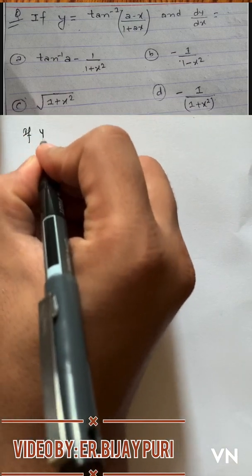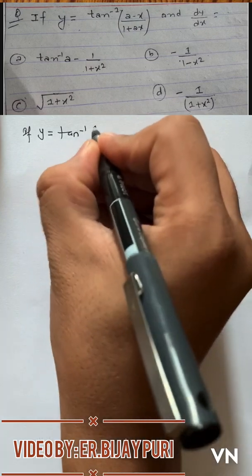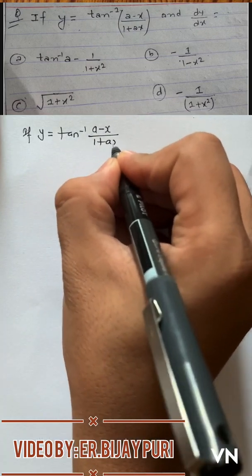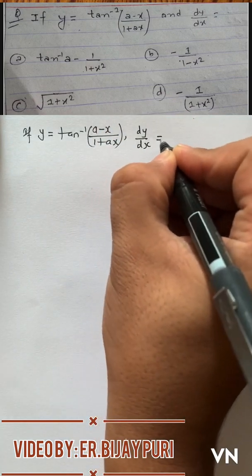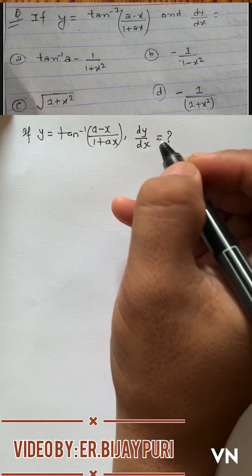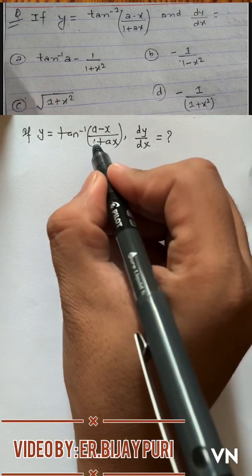The question is: if y equals tan inverse of (a minus x) by (1 plus ax), then dy by dx is equal to what?